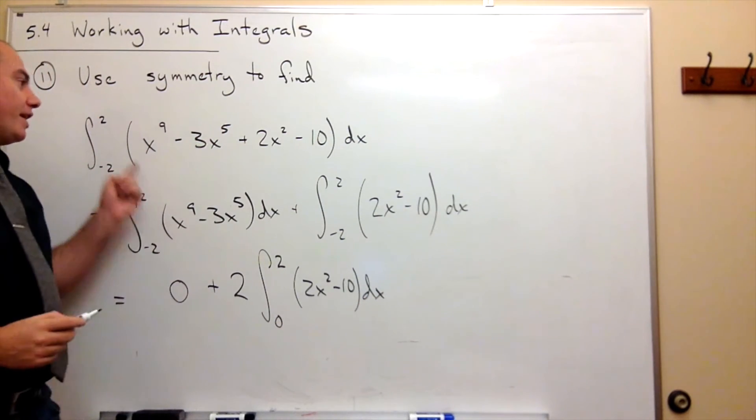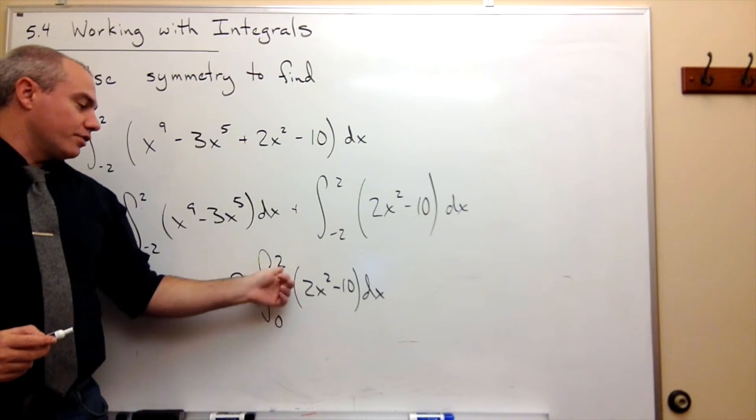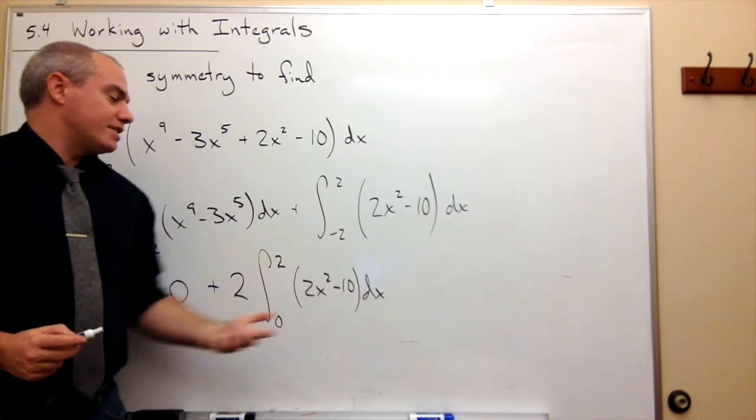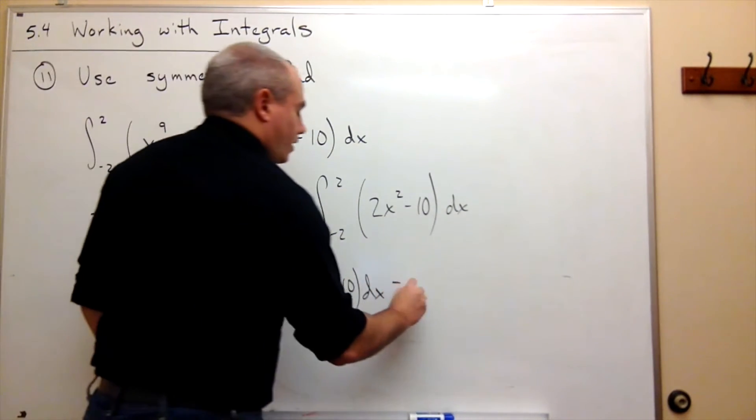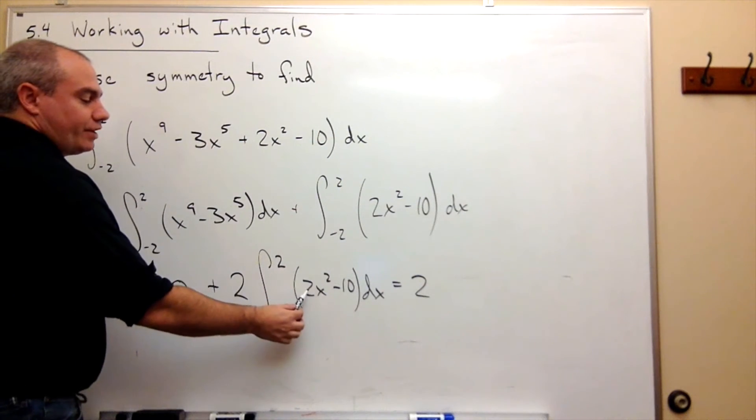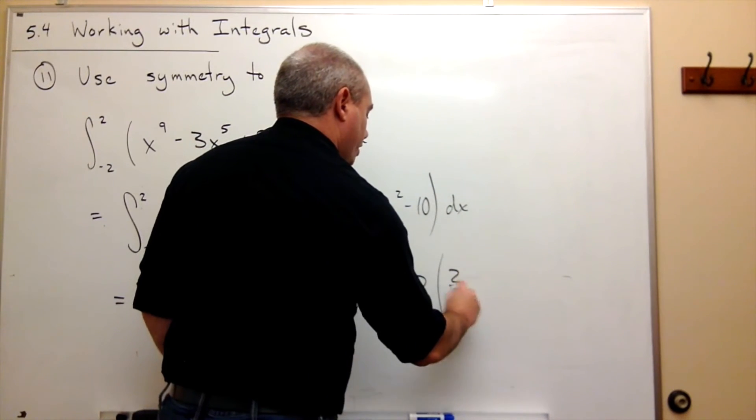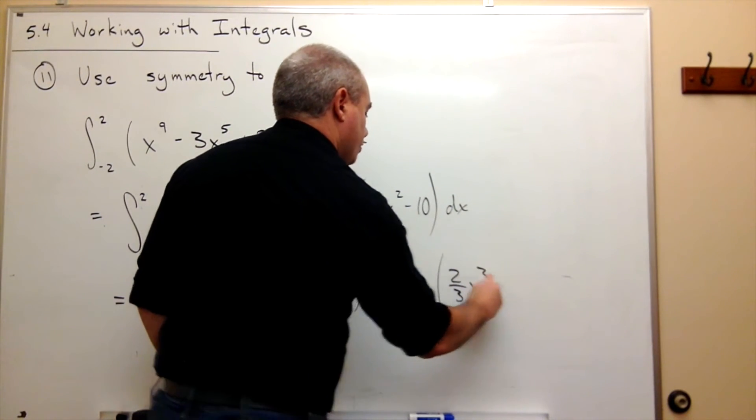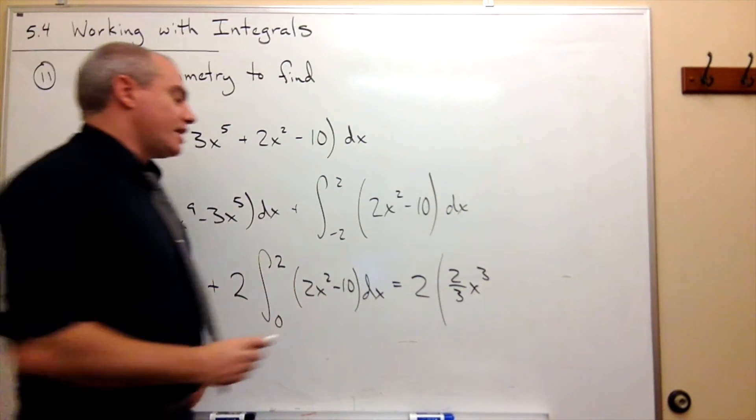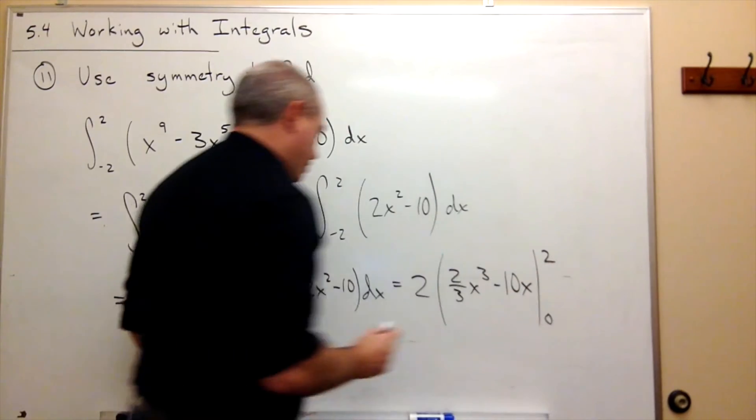So we've simplified this whole problem down to 2 times the integral from 0 to 2 of 2x squared minus 10 dx, which is 2 times, if I take an antiderivative of 2x squared, I get 2/3 x cubed minus 10x evaluated from 0 to 2.